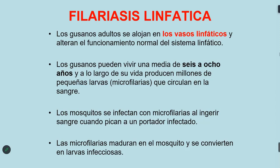Estos gusanos pueden vivir un promedio de 6 a 8 años y producen millones de pequeñas larvas llamadas microfilarias. Estas microfilarias pasan desde los vasos linfáticos a la circulación en la sangre. Los mosquitos se infectan al picar e ingerir sangre de un portador infectado. Las microfilarias maduran en los mosquitos y se convierten en larvas infecciosas, que al picar a otra persona pueden inocular las microfilarias infecciosas.